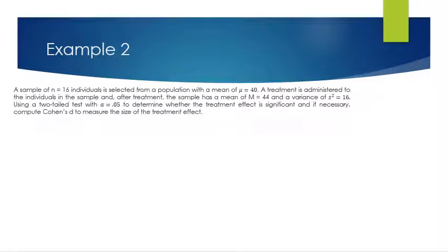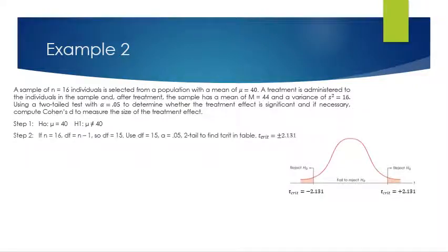Second example: 16 individuals are selected from a population with a mean of 40. After treatment, the sample has a mean of 44 and a variance of 16. Use a two-tail test with alpha .05 to determine whether the treatment effect is significant. Step one: hypotheses — the mean either equals 40 or does not equal 40. Step two: n is 16, so degrees of freedom is 15. Using degrees of freedom 15, alpha .05, two-tail, the critical values are plus and minus 2.131. Draw your graph showing two tails.